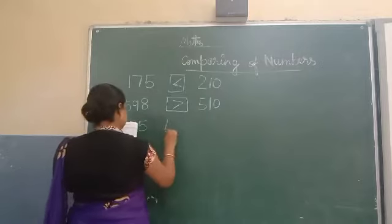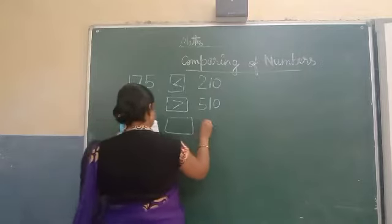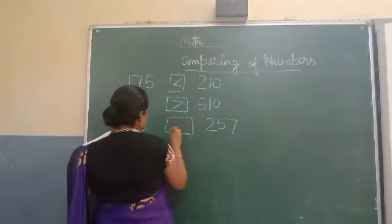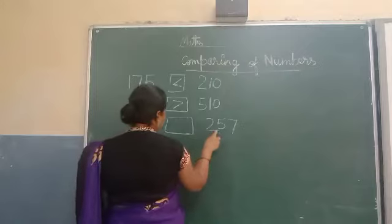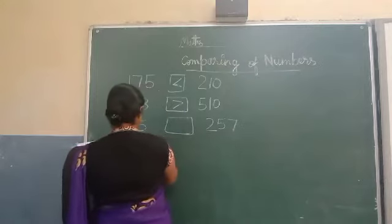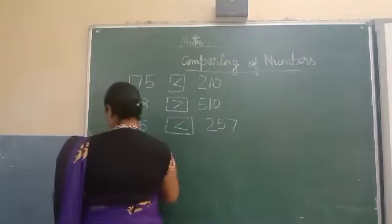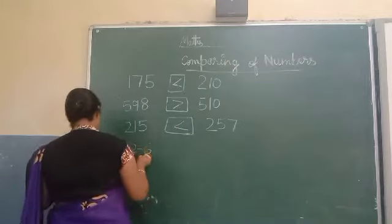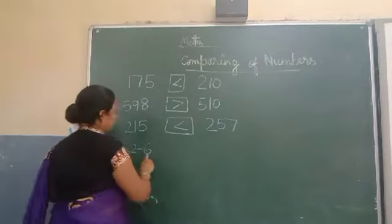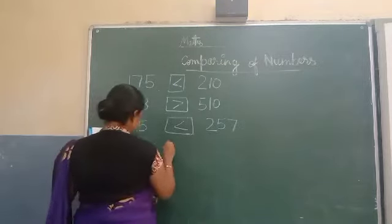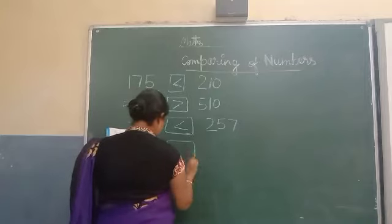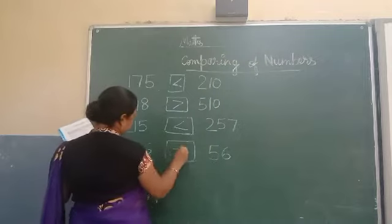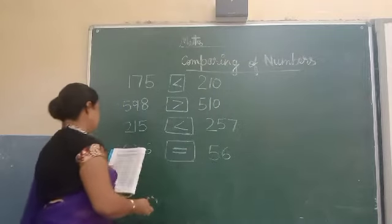Next, 255 and 257 — 255 is less than 257, which is greater than 255, so put less than here. Now, here is 62 minus 6, which equals 56, and here is also written 56 — both numbers are equal, so put the equal sign.